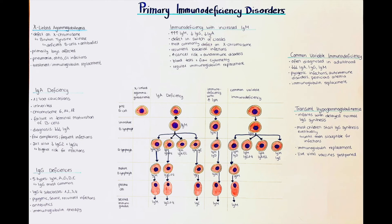Flow cytometry is also used to investigate biomarkers of the cell surface, which can indicate a problem. In immunodeficiency with increased IgM, there is a decreased expression of the CD40 ligand protein on the cell surface, and this is one of those indicators checked with flow cytometry. Further, molecular genetic testing can be made to confirm a diagnosis. Patients will receive regular immunoglobulin replacement therapy and may also receive prophylactic antibiotic therapy.